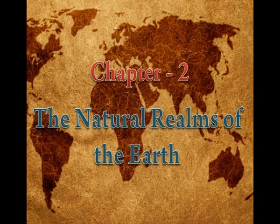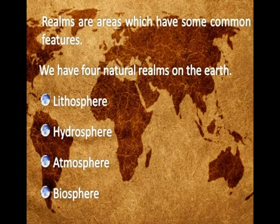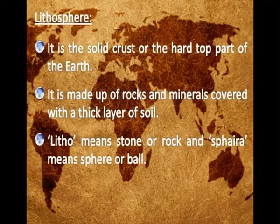The natural realms of the earth are areas which have some common features. We have four natural realms on the earth: lithosphere, hydrosphere, atmosphere, and biosphere. The lithosphere is the solid crust or the hard top part of the earth. It is made up of rocks and minerals covered with a thick layer of soil. Litho means stone or rock.